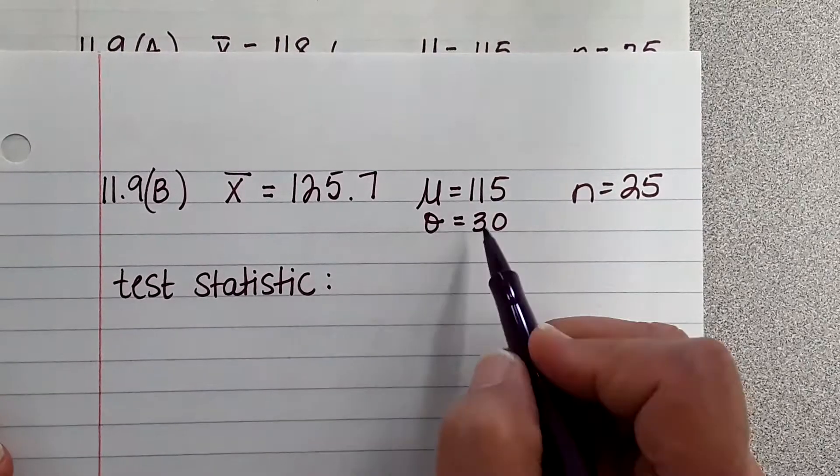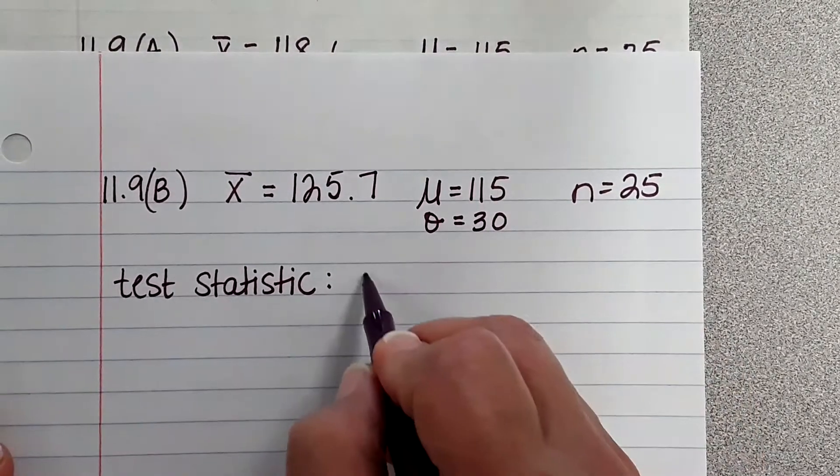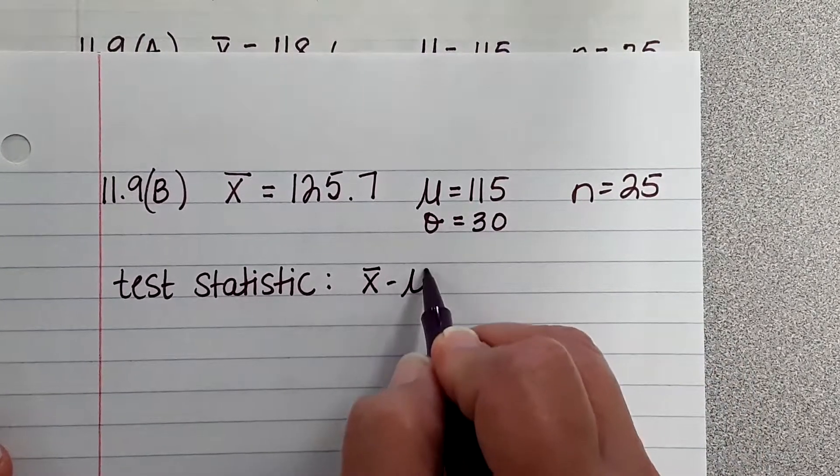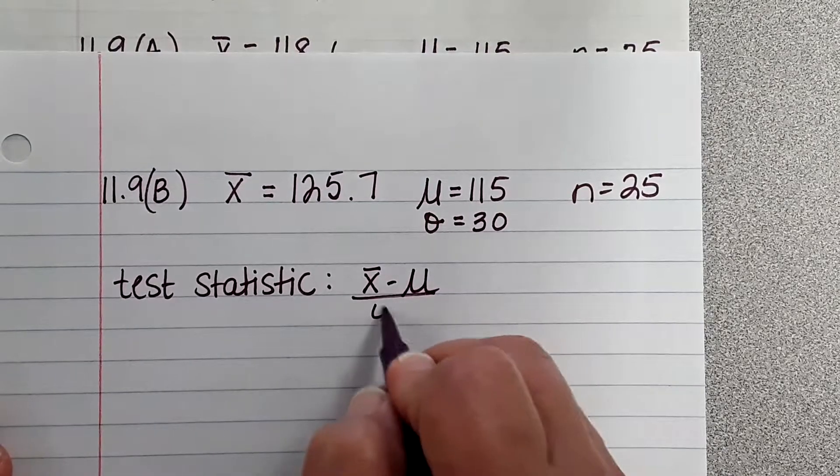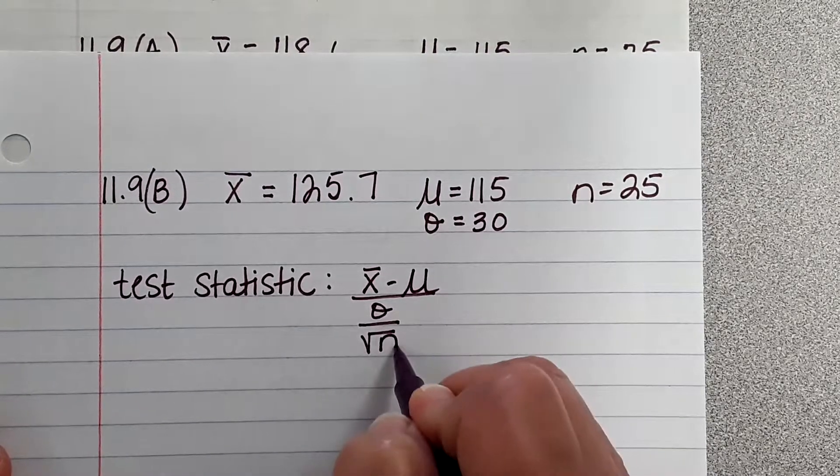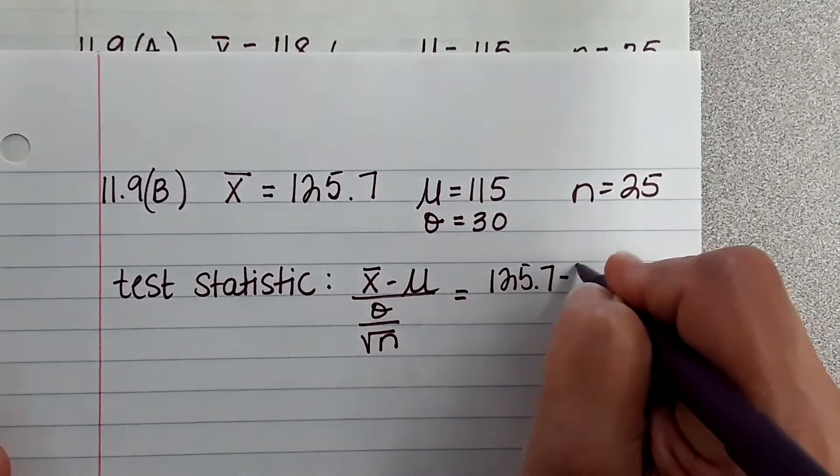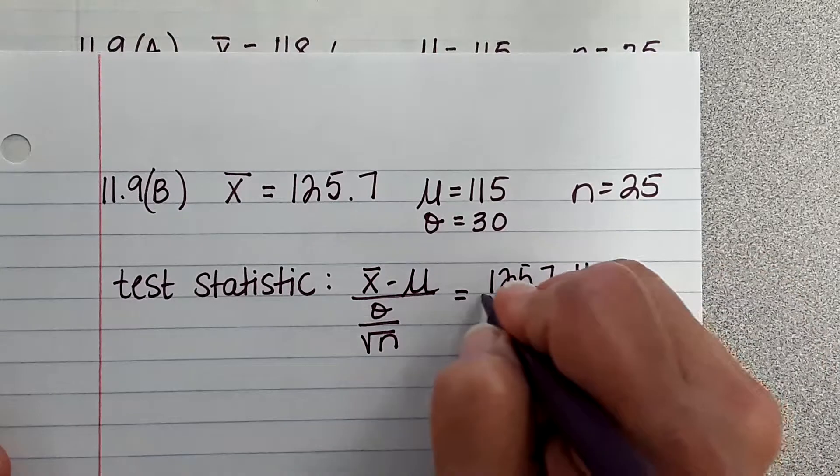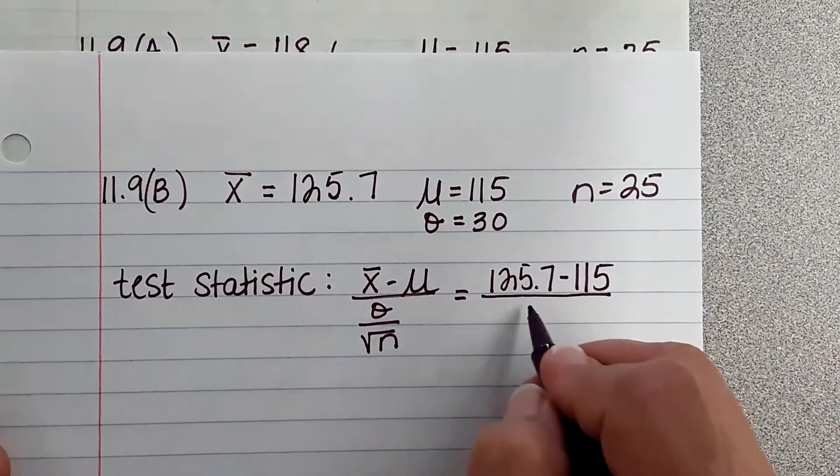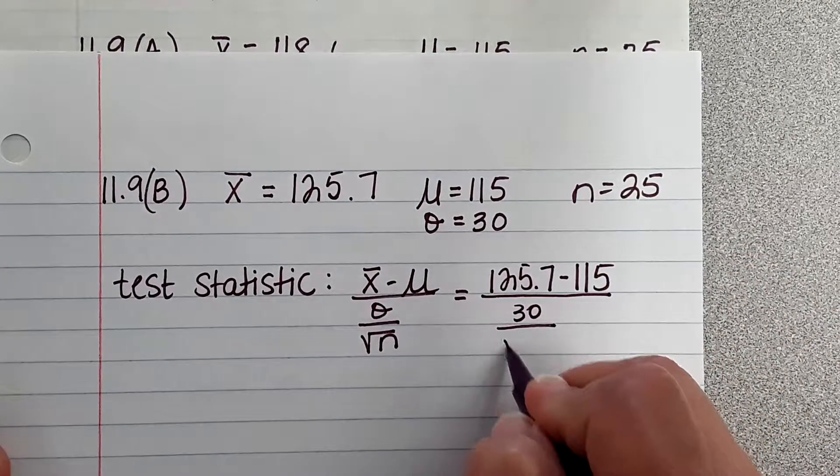Okay? So our test statistic, because we know sigma, is going to be x-bar minus mu over sigma divided by the square root of n. X-bar is 125.7, mu is 115, sigma is 30, and we're going to divide by the square root of 5.